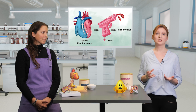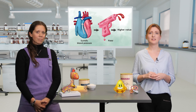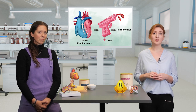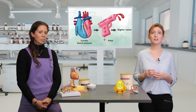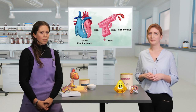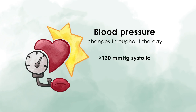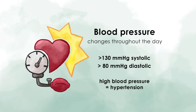Doctors measure blood pressure with a stethoscope after a temporary blood flow restriction. They can distinguish both pressure values because they sound different once the doctor opens the vessel again. Having blood pressure consistently higher than a systolic reading of 130 mmHg and a diastolic of 80 or above may result in the diagnosis of high blood pressure, also called hypertension.